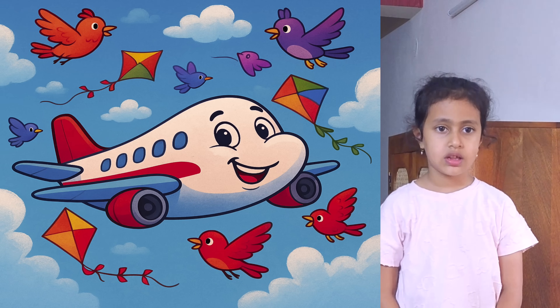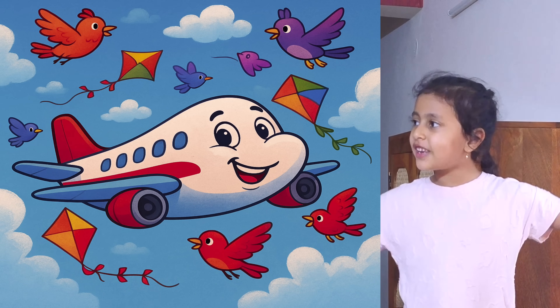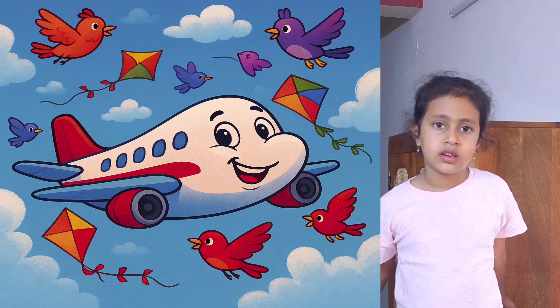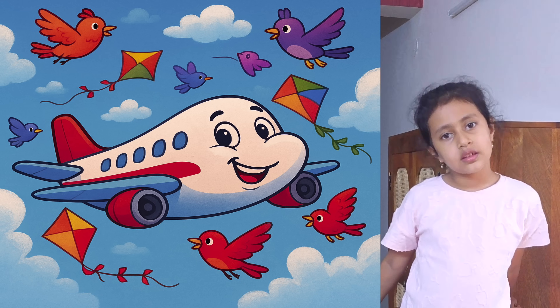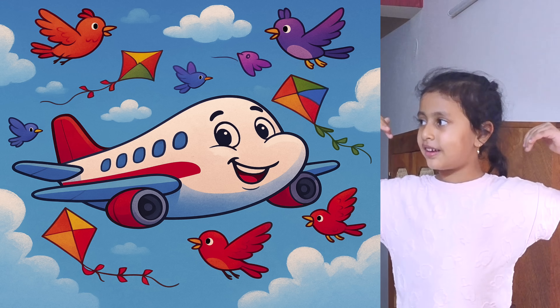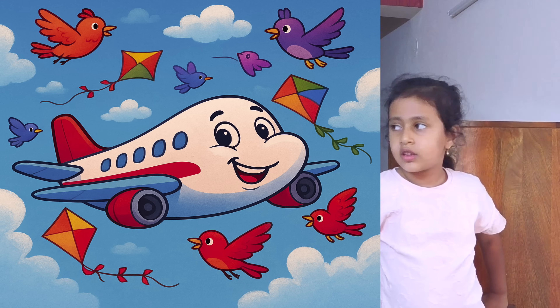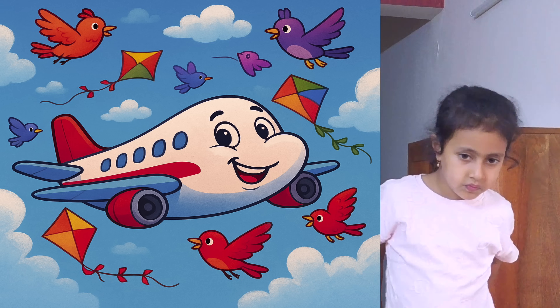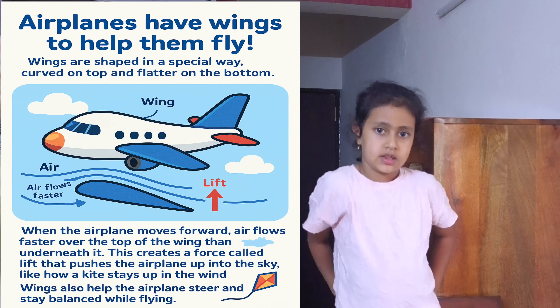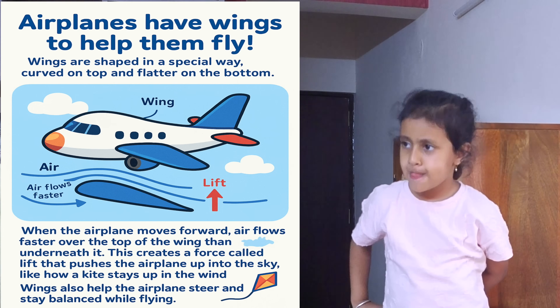So what is your first question? Why do aeroplanes have wings? Now you know birds have wings? Why do birds have wings? To fly. Similarly, aeroplanes have wings to help them fly. Wings are shaped in a special way — when they are folded, they are shaped back. The upper part of the wing is curved, and the lower part is flat, absolutely flat.